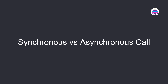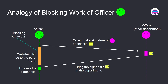To understand synchronous and asynchronous calls, I'll use an analogy with one officer shown here. This officer wants to get a signature on some file. One possible solution is the first officer himself takes that file, goes to the office of the other officer, takes the signature, returns to his office, and then processes the file.